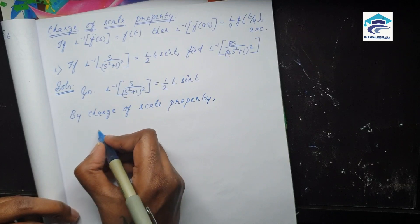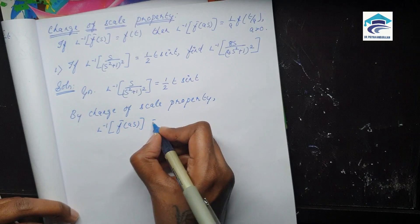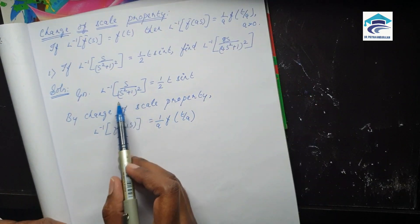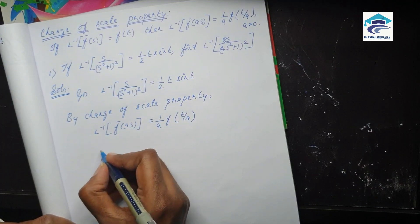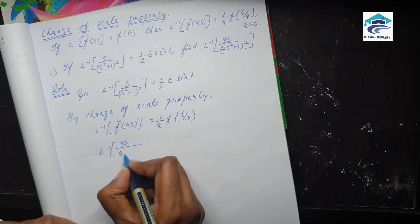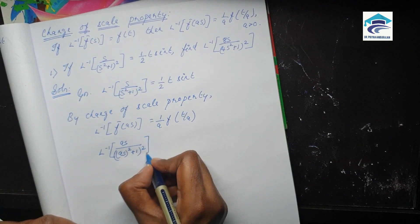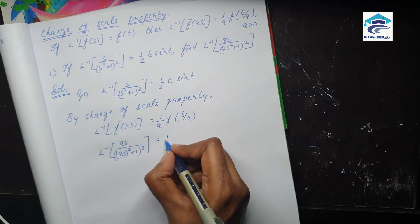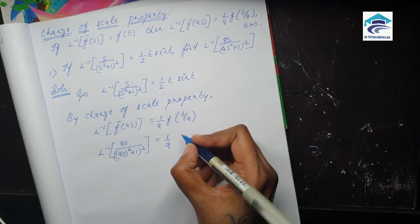By the change of scale property, L inverse of f-bar of as is equal to 1 by a times f of t by a. So if s by (s² + 1)² is our f-bar of s, then f-bar of as will be as by (as)² + 1)², which equals 1 by a times f of t by a — so wherever t appears, we write t by a.